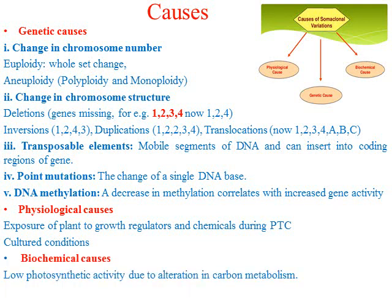Then we have biochemical causes. If the photosynthetic activity is normal in the mother plant but less in the new plant, that also leads to somaclonal variation. Similarly, if there is a change in nitrogen metabolism in the new plant compared to the mother plant, that may also lead to somaclonal variation. These are the three main causes. The most important one is the genetic cause, because these are heritable and occur at high frequency.